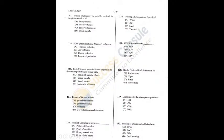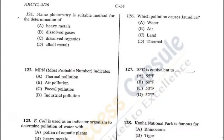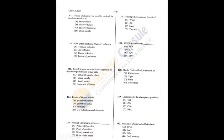Question 121: Flame photometry is a suitable method for determination of heavy metals — A is the correct answer. Question 122: Most Probable Number (MPN) indicates fecal pollution — C is the correct answer. It is used for testing water quality.